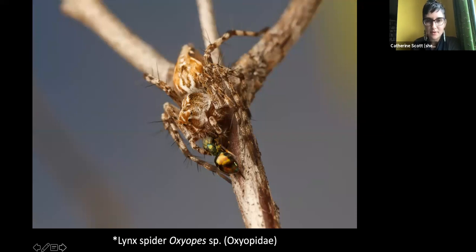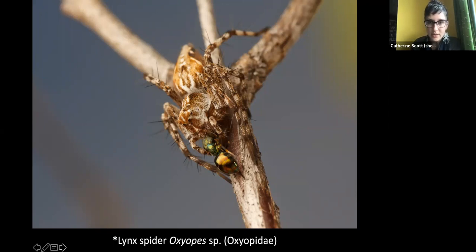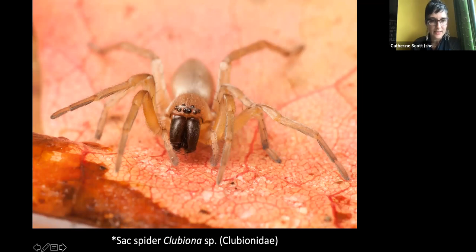Lynx spiders are also ambush predators — cat-like, with really spiky legs. Sack spiders are also super common ambush predators, often found on leaves.